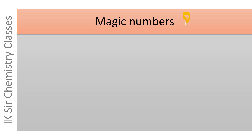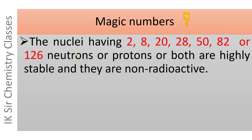Let us see what magic numbers are. The nuclei having 2, 8, 20, 28, 50, 82, or 126 neutrons or protons or both are highly stable and such nuclei are non-radioactive. It means if the number of neutrons or the number of protons or both in a nucleus touches these numbers, the nucleus becomes highly stable and non-radioactive.